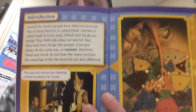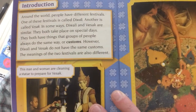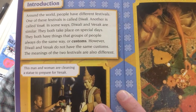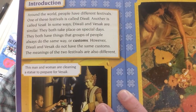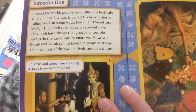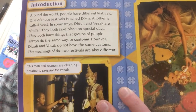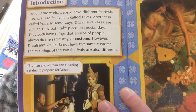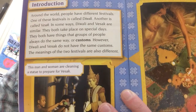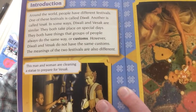One of the bold words we saw on this page was 'customs.' It told us in the text what that meant, but it is also found in the glossary. Customs are things that groups of people always do the same. For example, for people who celebrate Christmas, one of the customs is to get a tree and put gifts underneath.